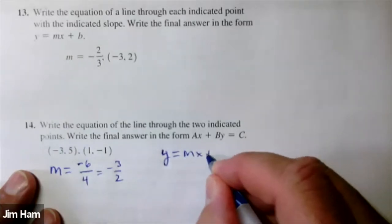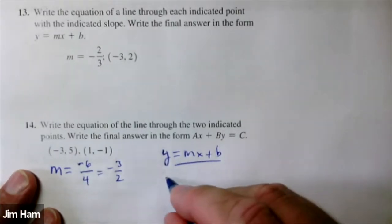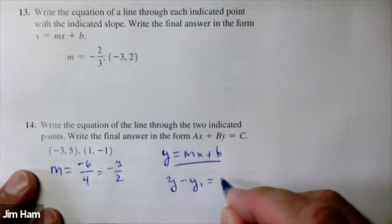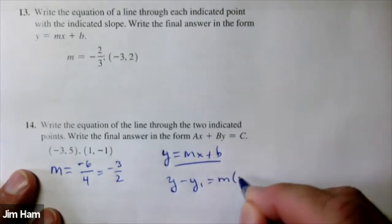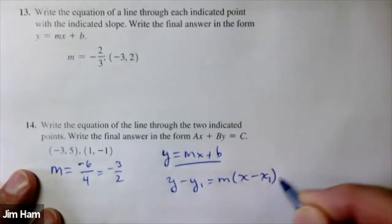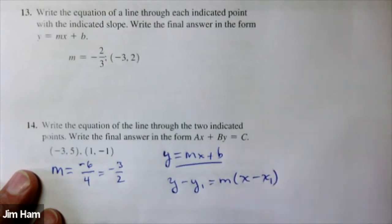y equals mx plus b — that's one equation. The other one is called the point-slope form. If you just apply this equation here, it'll work out for you.